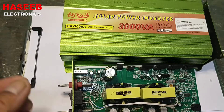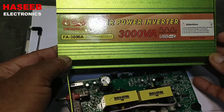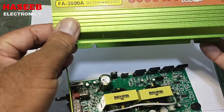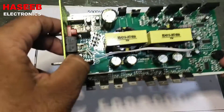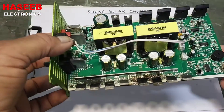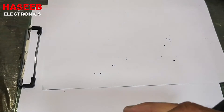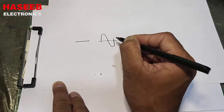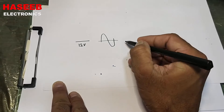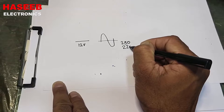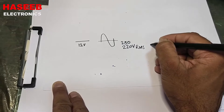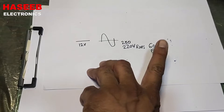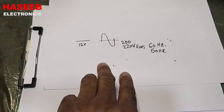In this video we will discuss a solar power inverter. It is 300 VA. It takes 12 volt DC input from a battery or solar panel and converts it into an AC signal of 220 volts at 50 Hz. The output may be 230 or 220 volts at 50 or 60 Hz depending on the circuit.